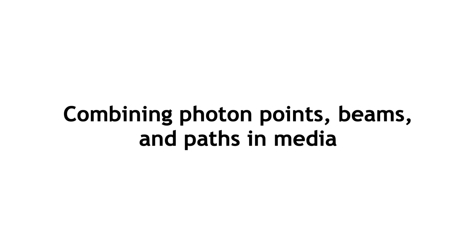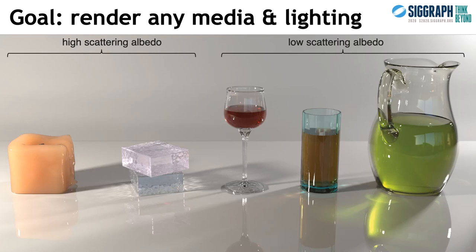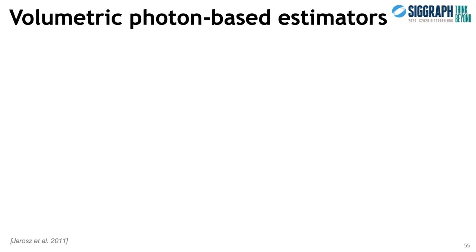Now let's see how these same ideas can be transferred to participating media to combine even more techniques. Media can have widely varying properties: high or low scattering albedo, optically dense or sparse, and diffuse or specular lighting. Ideally we want a single algorithm that can efficiently render all these various cases. In addition to bidirectional path tracing, there are many available photon density estimation techniques for media, classified by the type of primitive used for radiance representation — points or beams — and the query type — again, point or beam.